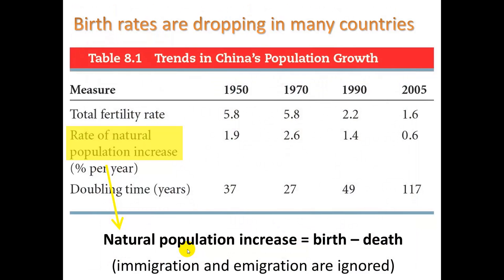We do know that birth rates are dropping in many countries. Looking at China, from 1950 the total fertility rate was 5.8 children born to each woman on average. Today, or by 2005, it is 1.6. The rate of natural population increase means birth minus death — immigration and emigration are excluded. It's just natural from birth and death, not relocation, and that number has also declined in China.